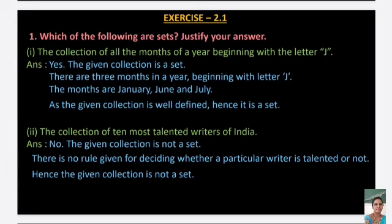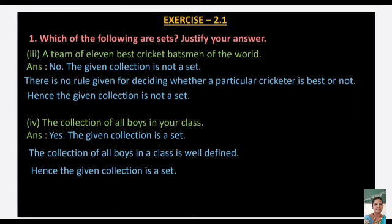Second one: the collection of 10 most talented writers of India. It is not a set because there is no rule given for deciding whether a particular writer is talented or not. Third one: a team of 11 best batsmen of the world. It is also not a set because there is no rule given for deciding whether a particular cricketer is the best or not, so the given collection is not a set.